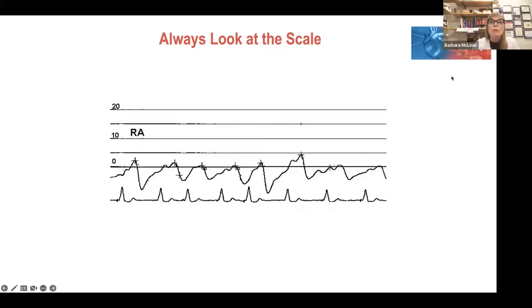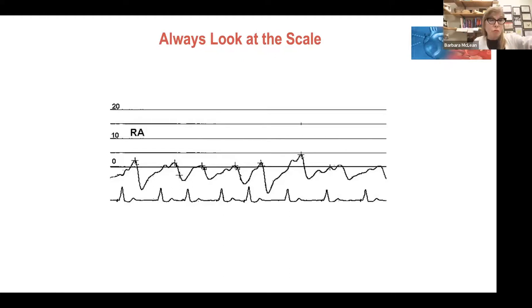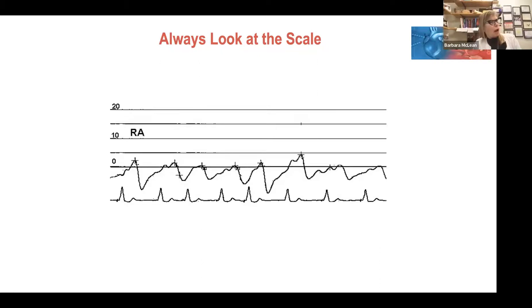Venous pressure is typically small, so you need a small scale to see the waveforms. If you see a digital reading but no waveform, touch the waveform window, go to optimize scale, and the monitor will shift the scale appropriately. If the right atrial pressure is partially below zero — one above and six below — the average might appear negative. Don't panic about a negative pressure reading; check your equipment first — ensure leveling, 300 mmHg in your pressure bag, no air in tubing.